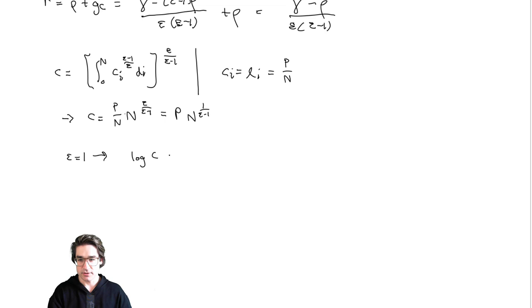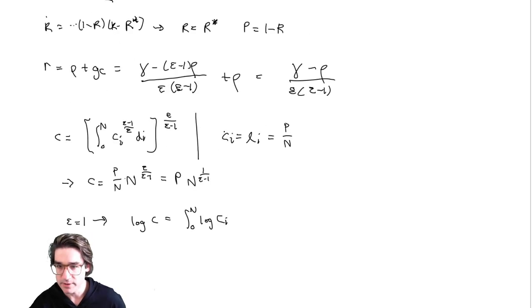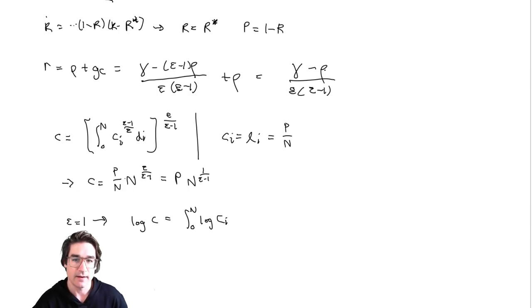As epsilon goes to one, R would explode, GC would explode. G itself would not explode — G itself would be just gamma. When G equals gamma, that means R equals one. So as epsilon goes to one, R goes to one because profits explode. People are just going nuts trying to do research and they completely forget about actually producing things. That's the other extreme.